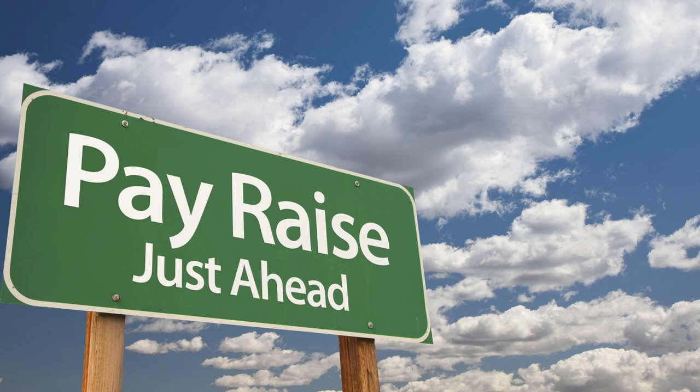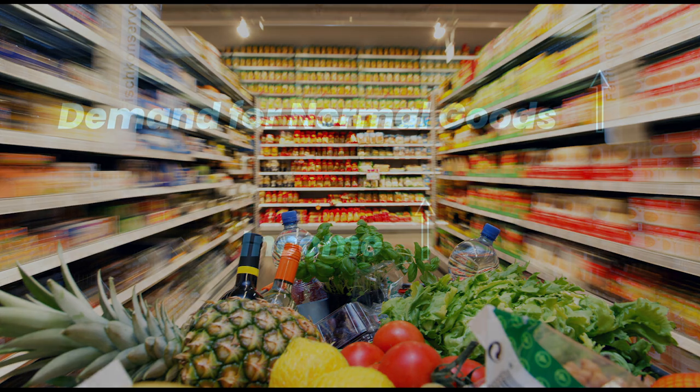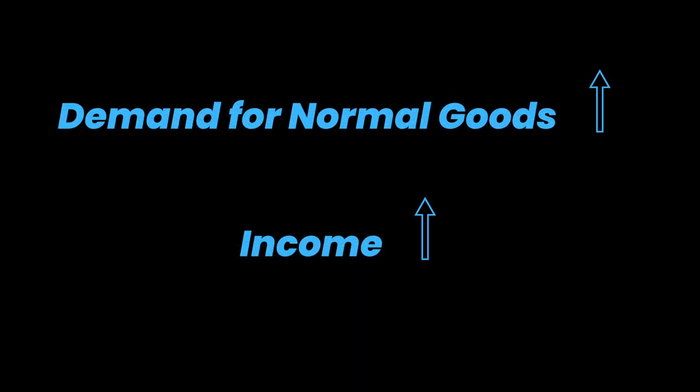When individuals who typically have a low income receive extra money — such as a raise, a bonus, or a government stimulus check — they may treat themselves by purchasing normal goods as opposed to the inferior goods they're used to purchasing. Demand for normal goods tends to have a direct relationship with income as well; demand for normal goods increases as income increases. However, if a consumer's income decreases due to a job loss or inability to work, their demand for normal goods will also go down, and they will seek inferior goods instead as they are now the only affordable option.